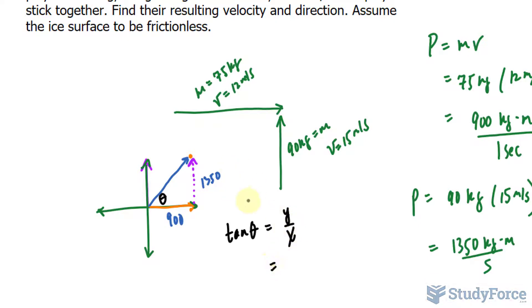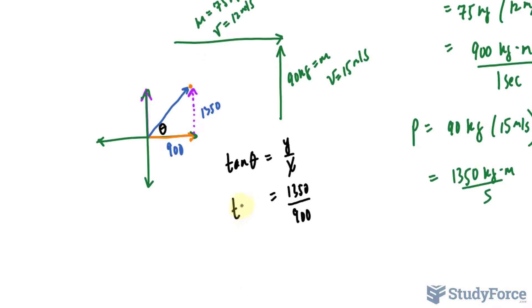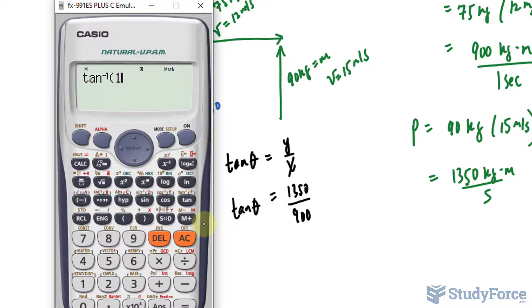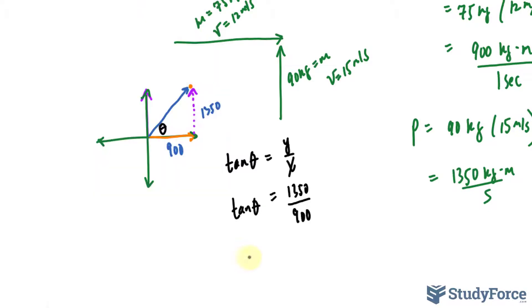Y over x. So we have 1350 over 900 and I'll use the inverse tan. So, inverse tangent, 1350 over 900 gives us an angle of 56.3 degrees.